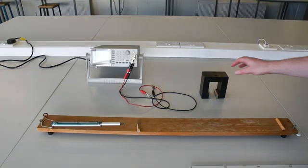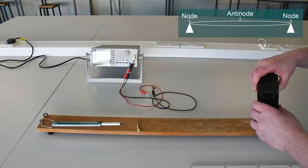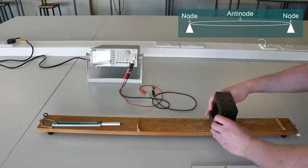We can then position our bar magnet halfway between the bridges where the anti-node of our standing wave will be located.